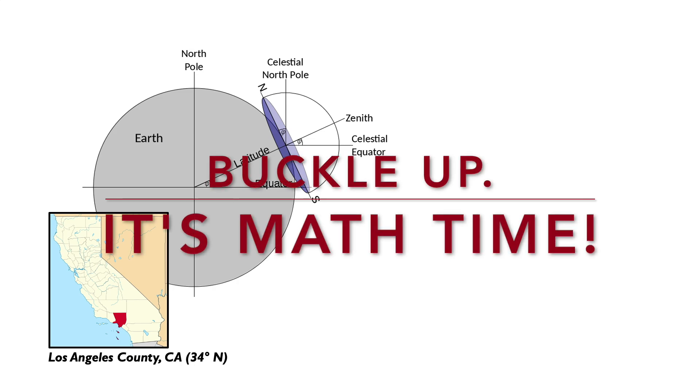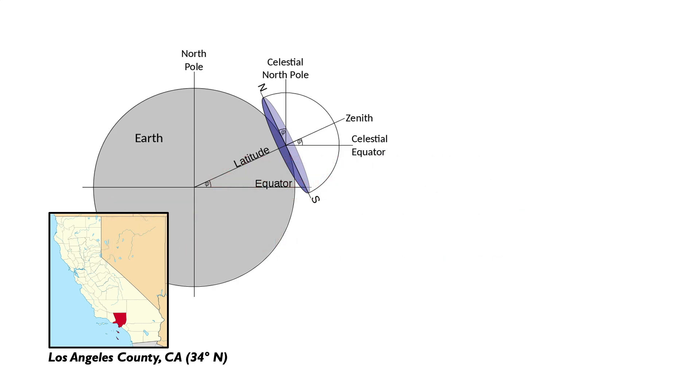Now bear with me as we discuss a little bit of geometry. This angle between the Earth's equator and your latitude is 34 degrees for Los Angeles.